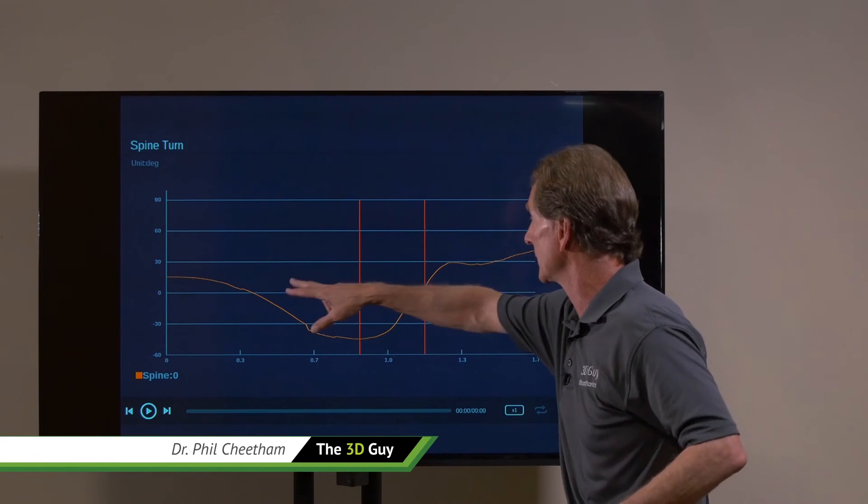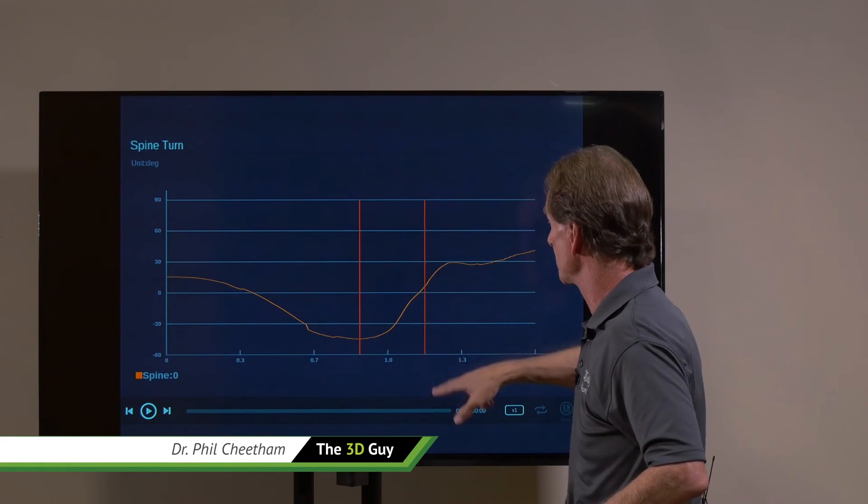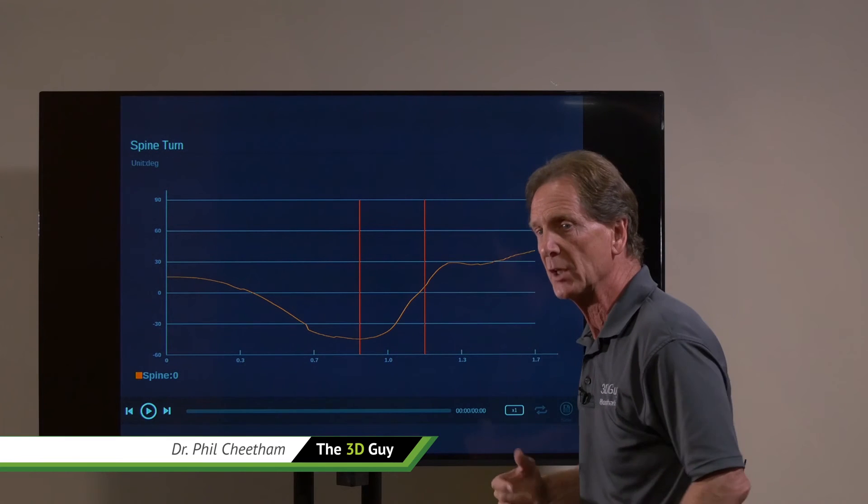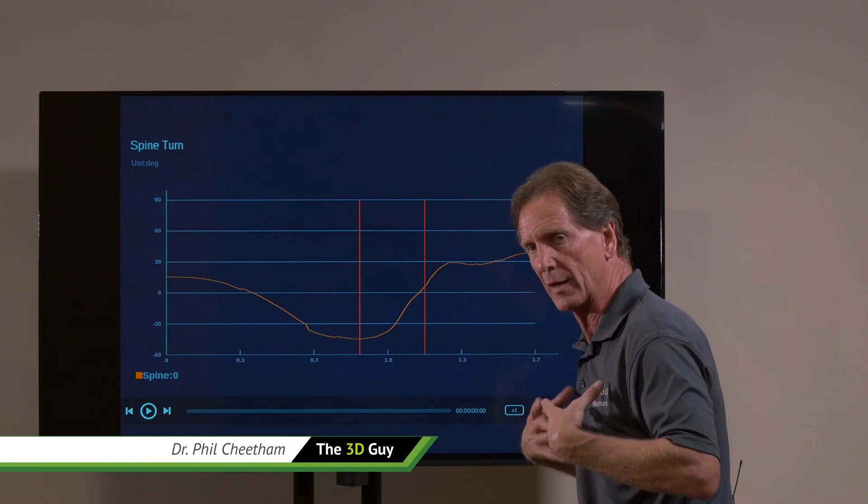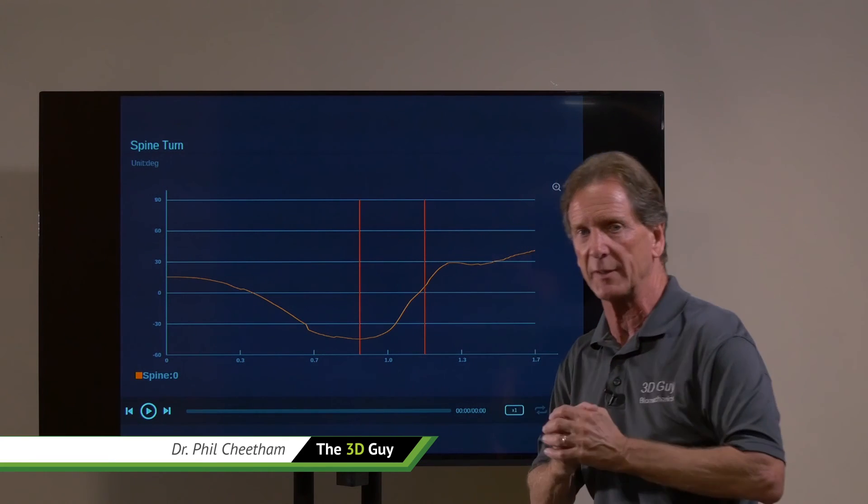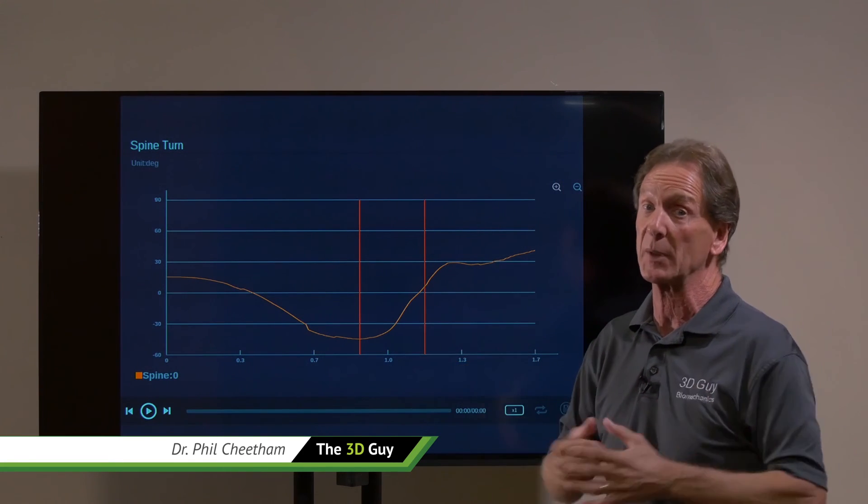So we see at impact, which is this red line here, we've probably got about 10 degrees. So that tells us that our pelvis is about 10 degrees ahead of our ribcage. So we've got a little bit of x-factor at impact and that's typical in the Tour Pros.